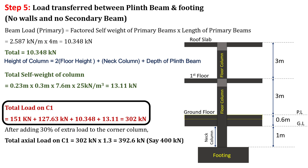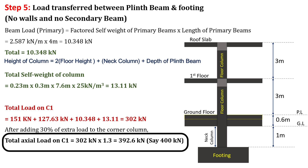Since this calculation gives an approximate value, we should add an increment as allowance for bending due to the effect of fixity. For interior columns, add 0–10%; for side columns, 11–15%; and for corner columns, 16–33%. As column 1 is a corner column, we add 30% extra load. Therefore, the final total load on column 1 = 302 x 1.3 = 392.6 kN.